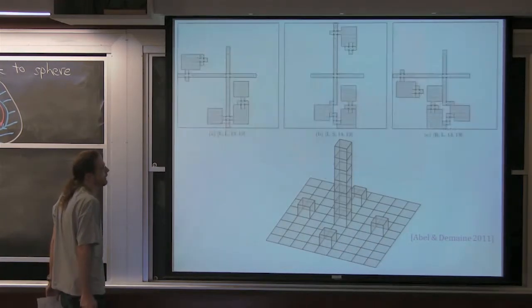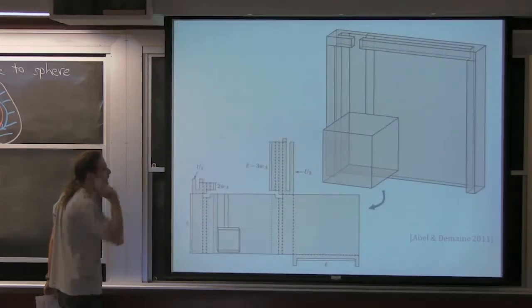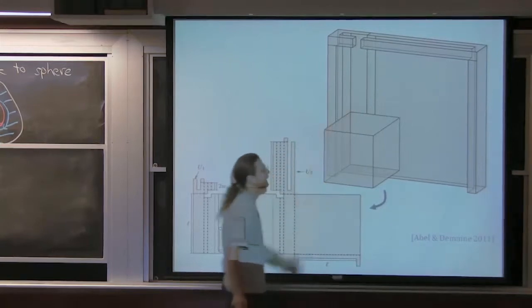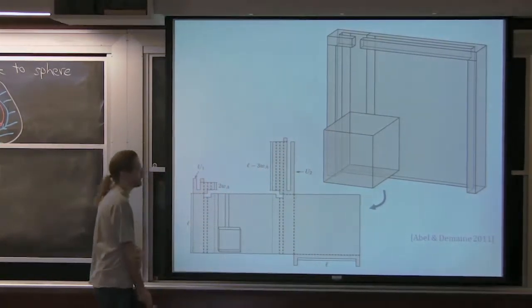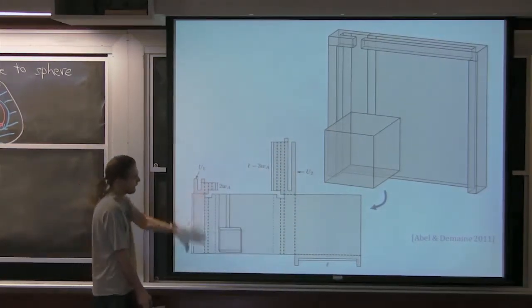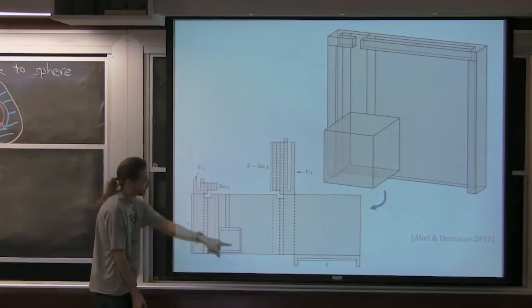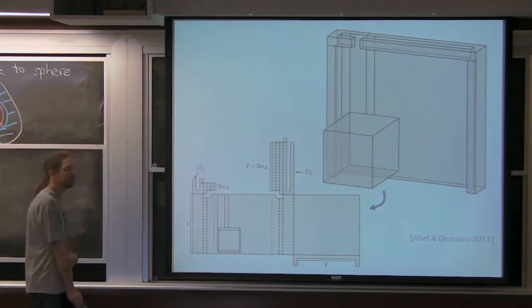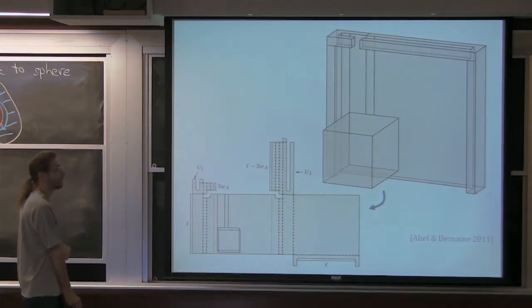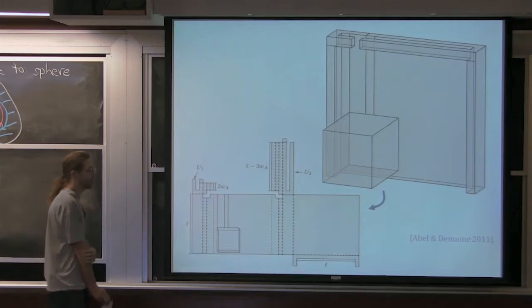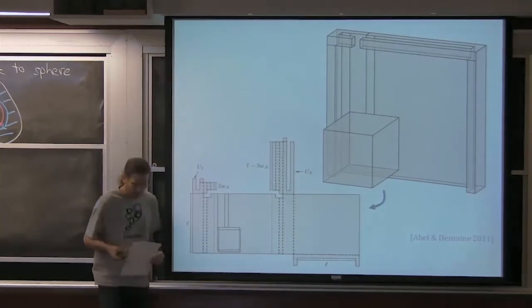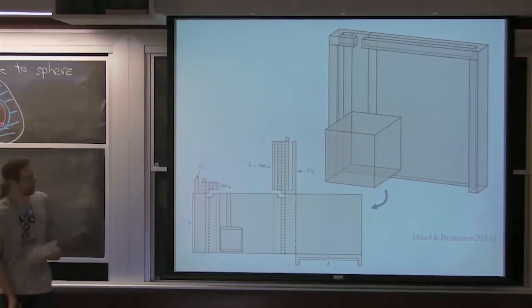That was a polyhedron with boundary. Without boundary, the construction is almost the same — you just add extra stuff on the outside to make it homeomorphic to a sphere. In the end you have basically the same construction: the nice square, the pipe, and some other stuff that provably doesn't matter. So this establishes NP-completeness of edge unfolding of topologically convex orthogonal polyhedra.